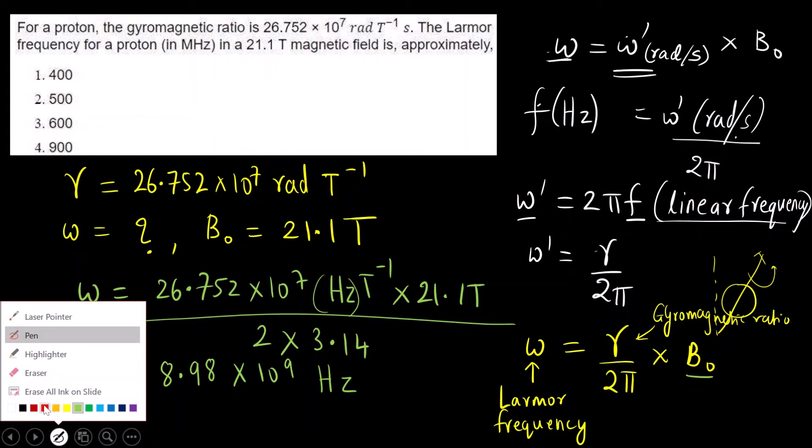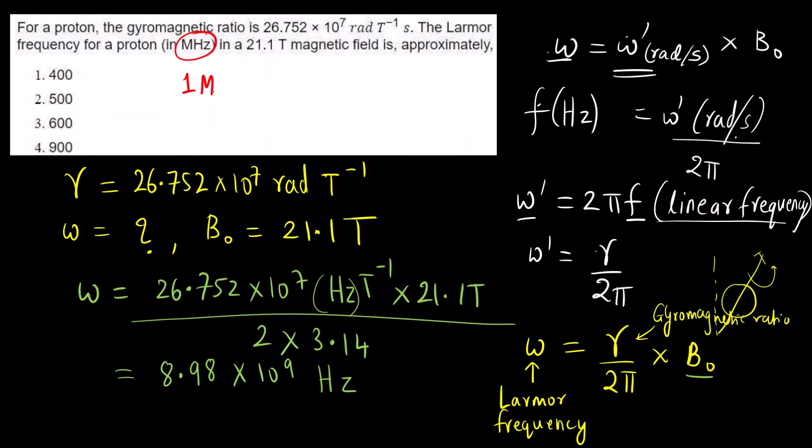And we want the answer in which units? In megahertz. What is megahertz? 1 megahertz is 10 raised to 6 Hertz. The final answer I will write here: 8.98 into 10 raised to 9, I can write it as 10 raised to 6 into 10 raised to 2. I can write this as 8.98 into 10 raised to 2 into 10 raised to 6. Final answer is Hertz. Tesla and Tesla inverse get cancelled. What is remaining is Hertz.